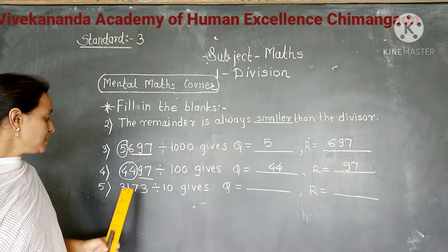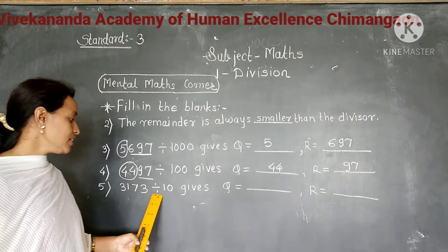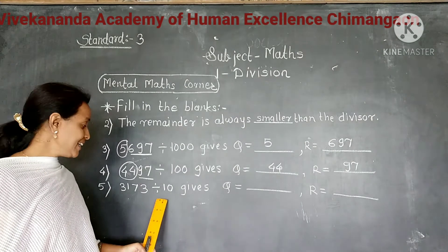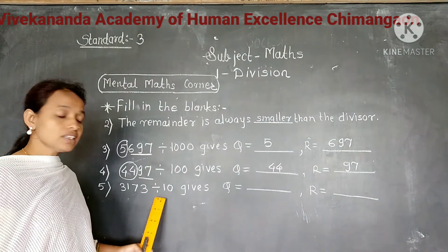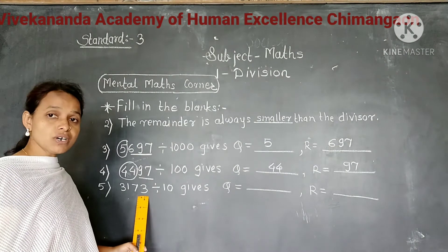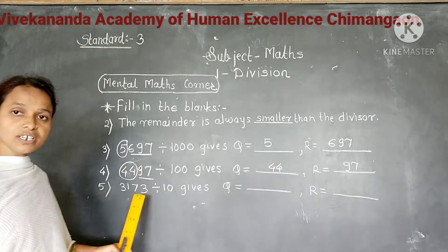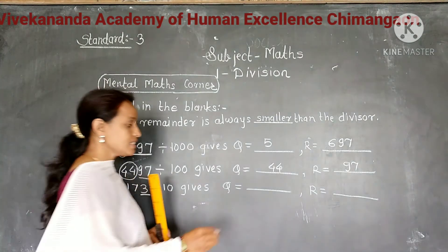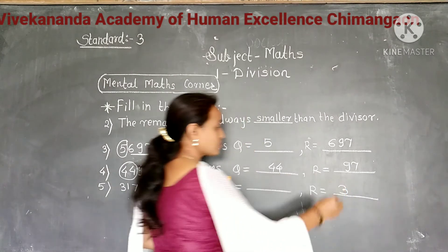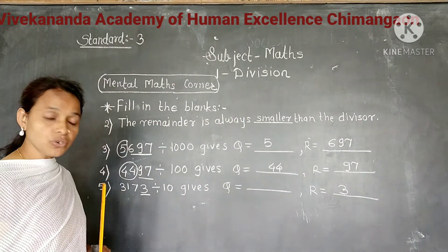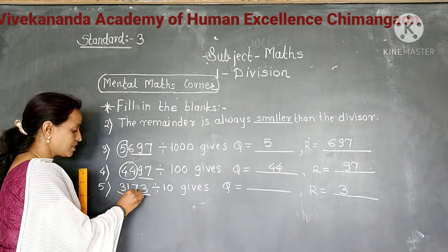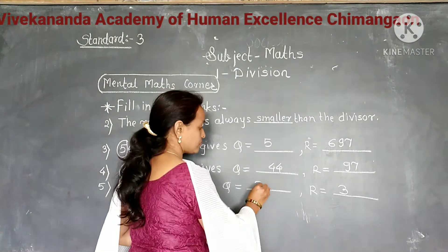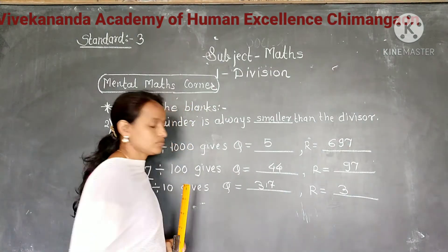Next: 3173 divided by 10. We have learned that when we divide any number by 10, the digit in the ones place forms the remainder. Here the digit in the ones place is 3, so the remainder is 3. And the rest of the digits form the quotient, which is 317.